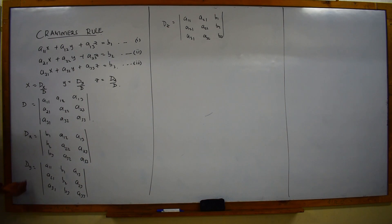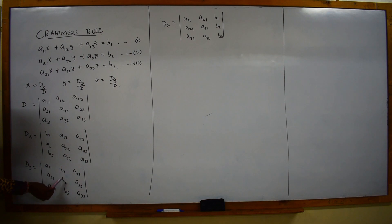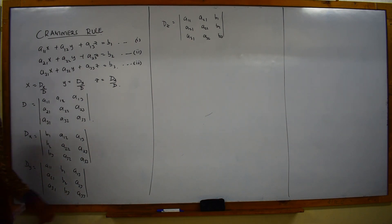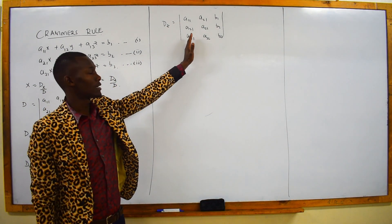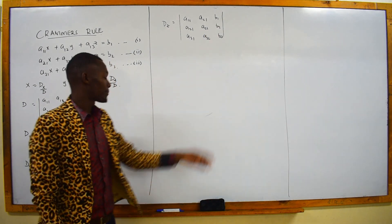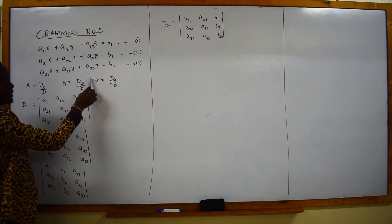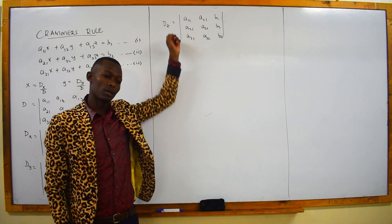Then for our Dy, the same process happens — where you have the constant terms of y, replace them with b1, b2, and b3. Then the constant terms of x and z remain. Also for our Dz, the constant terms of x and y remain, then replace the values of z with b1, b2, and b3. So you shall find your determinant with respect to z.